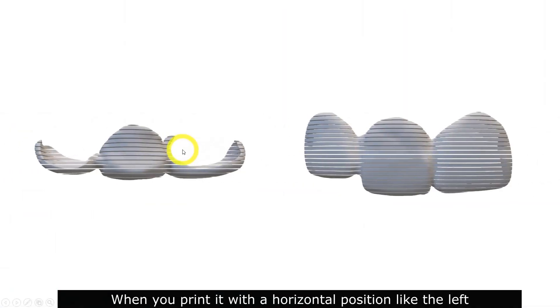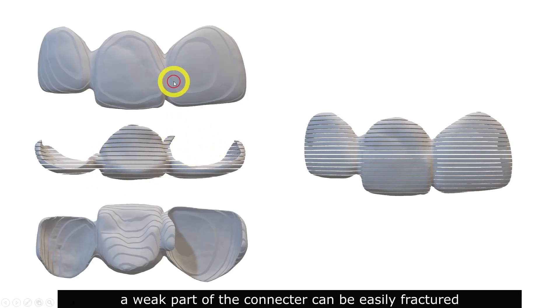When you print it with a horizontal position like the left, a weak part of the connector can be easily fractured because it will create a vertical line.